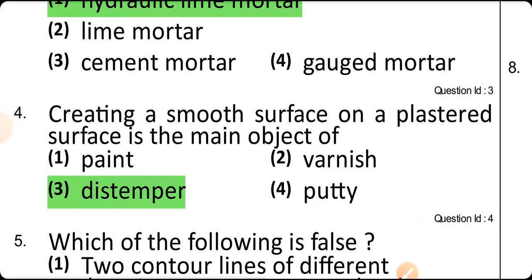Creating a smooth surface on a plastered surface is the main objective of a distemper.